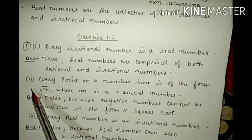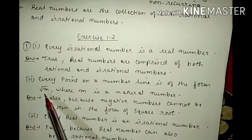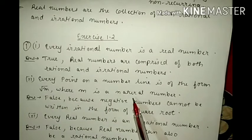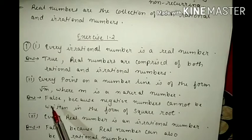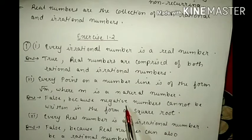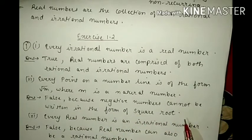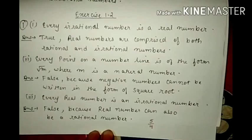The second statement is: every point on a number line is of the form under root m, where m is a natural number. This statement is false, because in a number line negative numbers are also there. Negative numbers cannot be written in the form of a square root. So this statement is false.